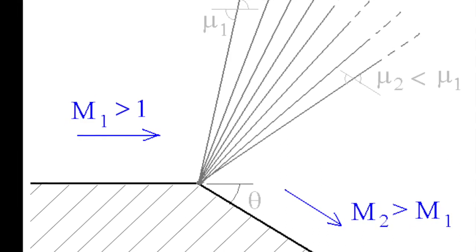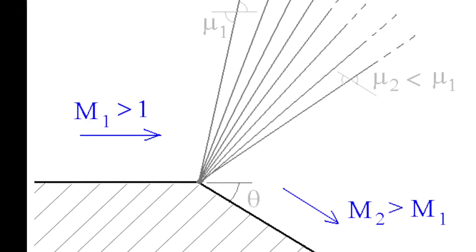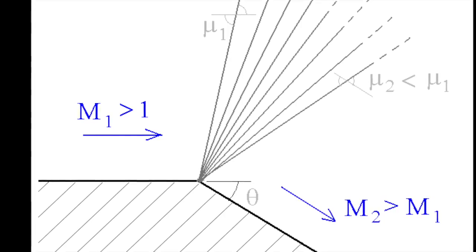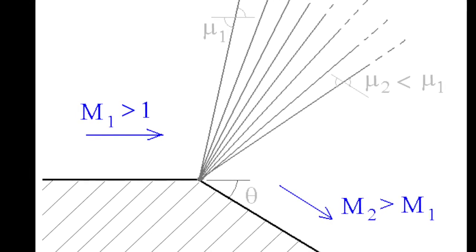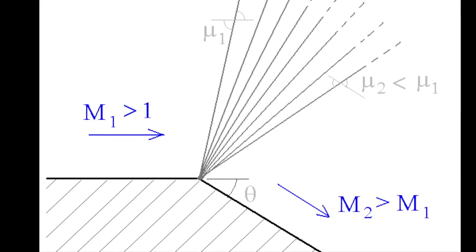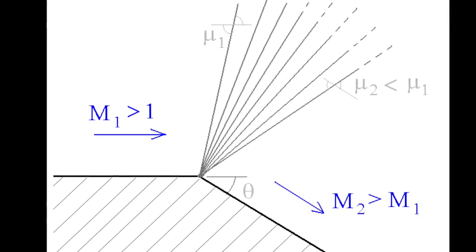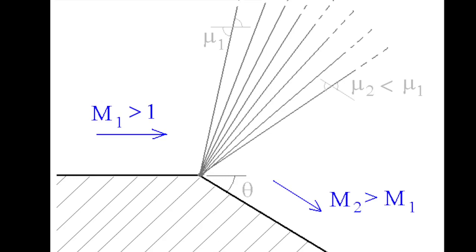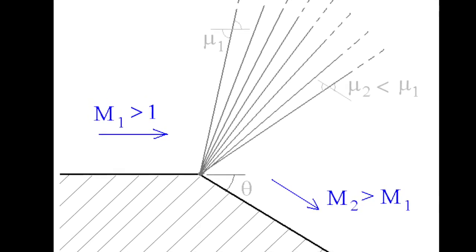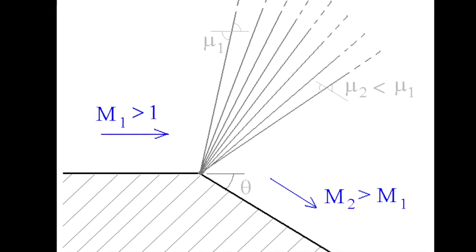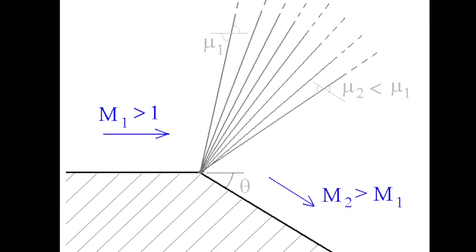This change in flow direction takes place across an expansion wave at the center point. Away from the surface, this oblique expansion wave fans out. The flow streamlines are smoothly curved through the expansion fan until they are all parallel and uniform in the direction of θ.